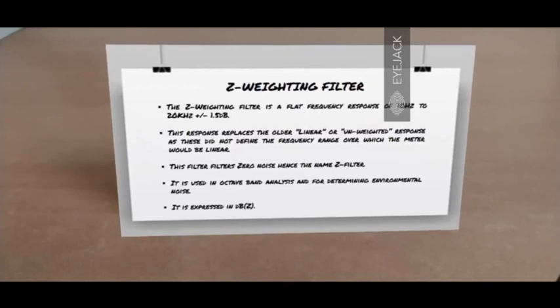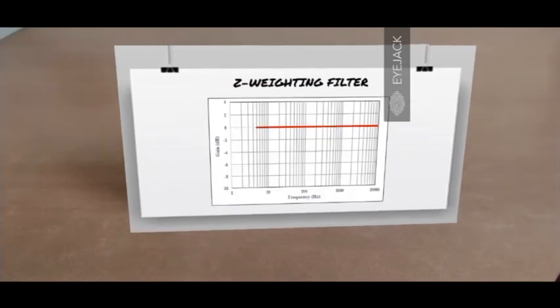What is a Z-weighting filter? The Z-weighting filter is a filter which has a flat frequency response from 10 hertz to 20 kHz with a deviation of 1.5 dB. So, it doesn't do any filtering at all. It filters 0 noise. Hence, it's given the name Z-filter where Z stands for 0. This response replaces the older linear or unweighted response because those did not define the frequency range over which the meter would be linear. It is used in octave band analysis for determining environmental noise. It is expressed in dBZ. Here's a Z-weighting filter. It's a straight line from 10 hertz to 20 kHz. So, it's gonna capture the noise as is and it'll not apply any filtering to that noise.